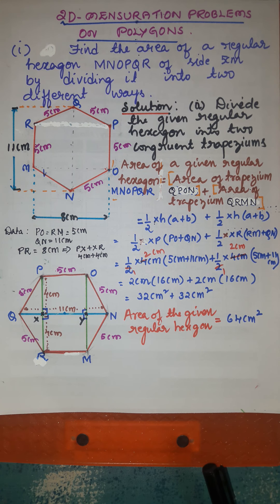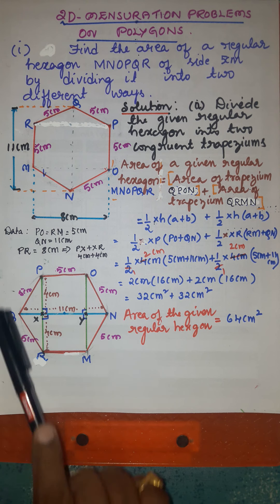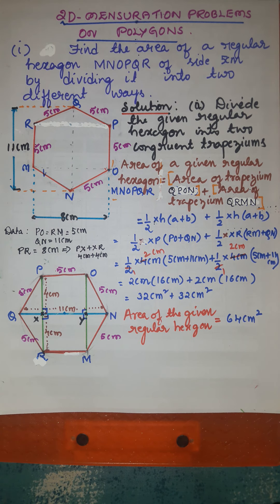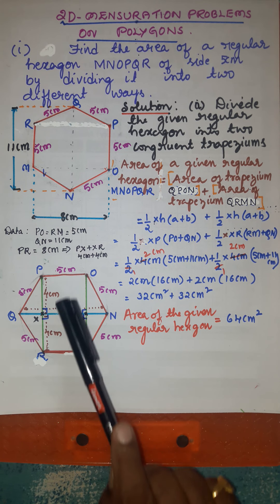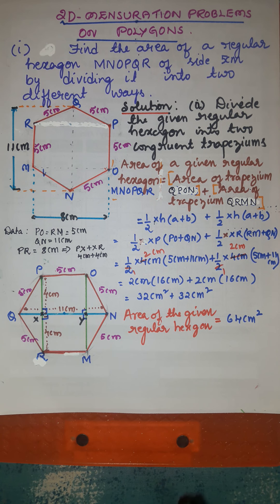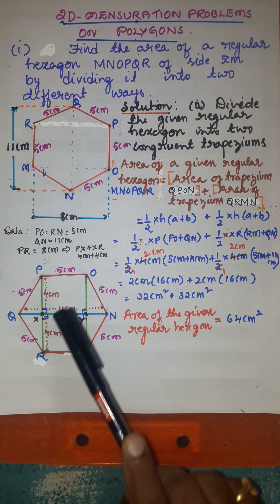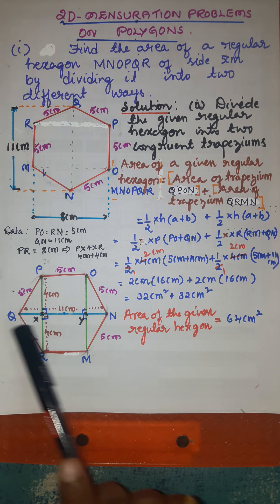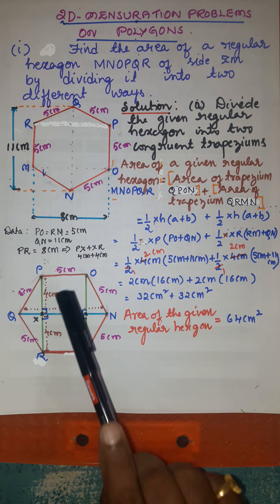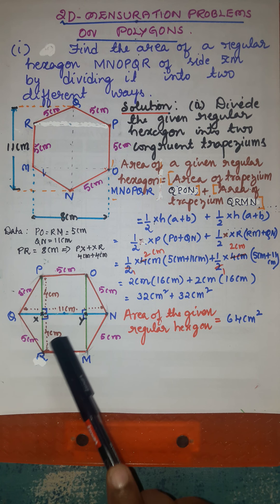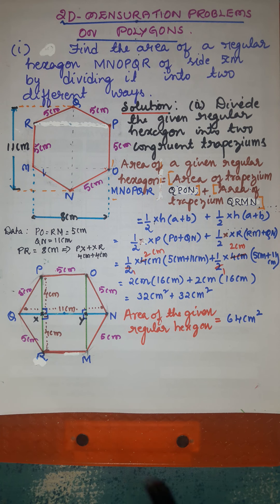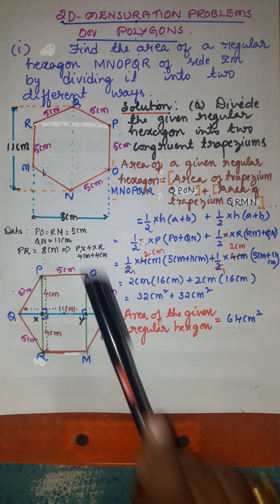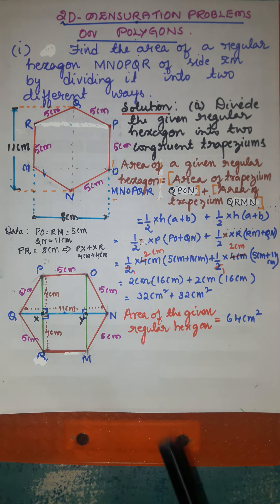One of the ways by which we can divide the given polygon is by dividing it into two congruent trapeziums. Congruent shapes are shapes which have the same shape and size. The two trapeziums here are QPON and QRMN — they have the same shape and size, so they are called congruent trapeziums. We are going to divide this regular hexagon into two congruent trapeziums.